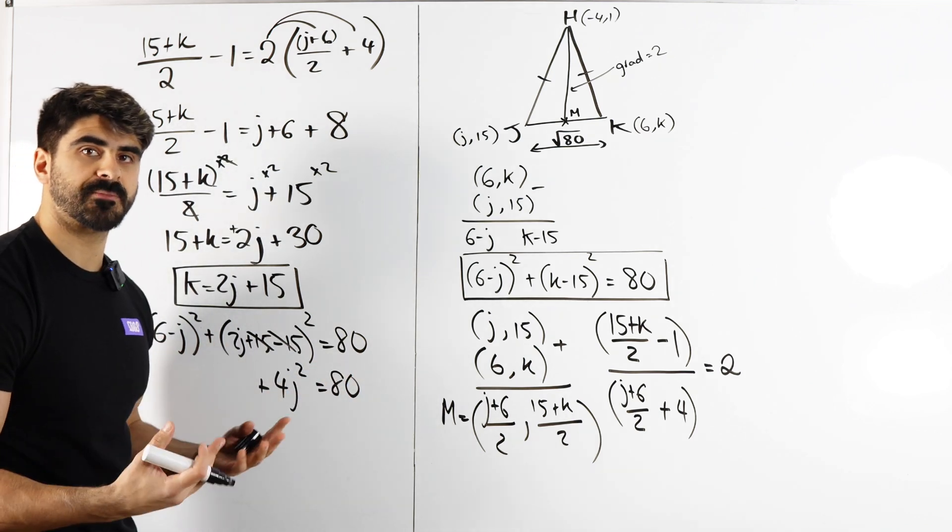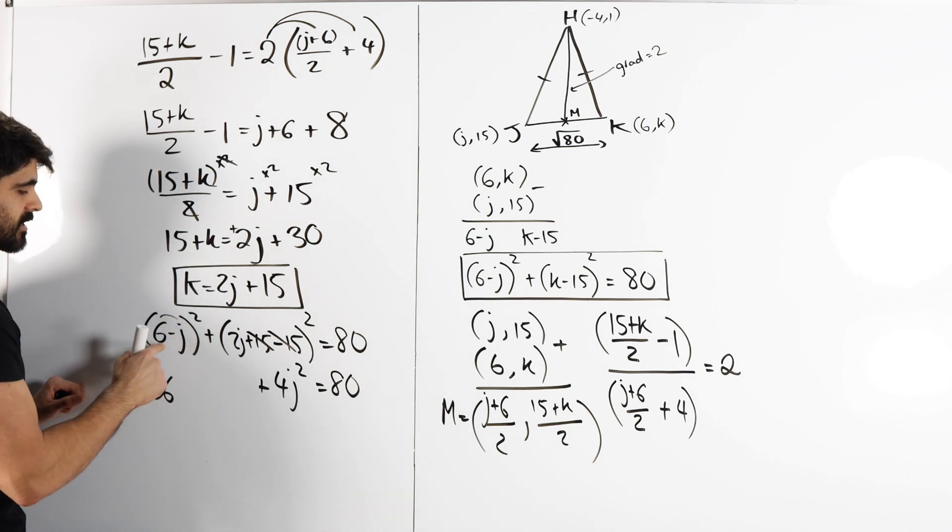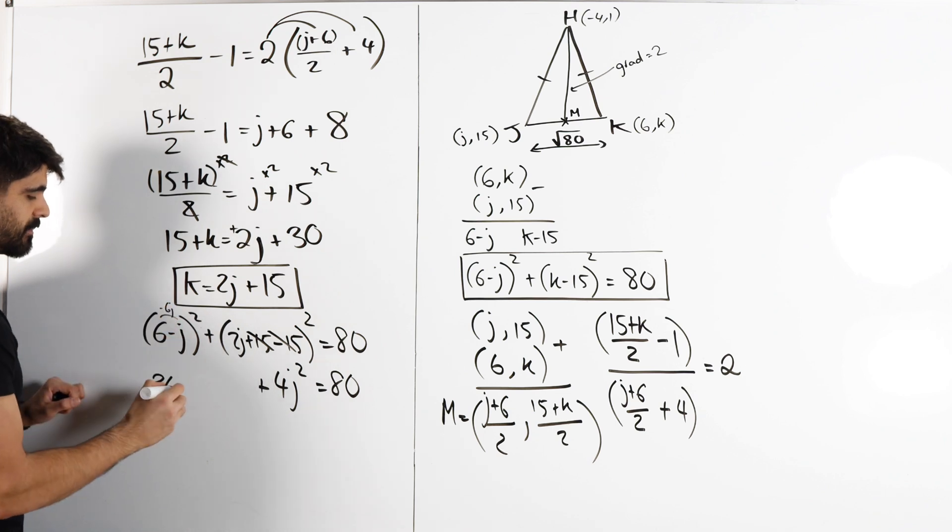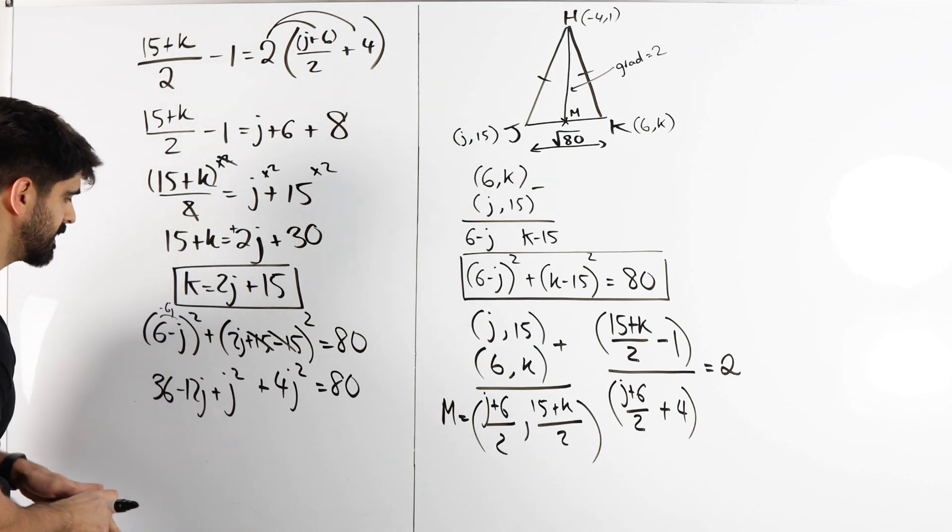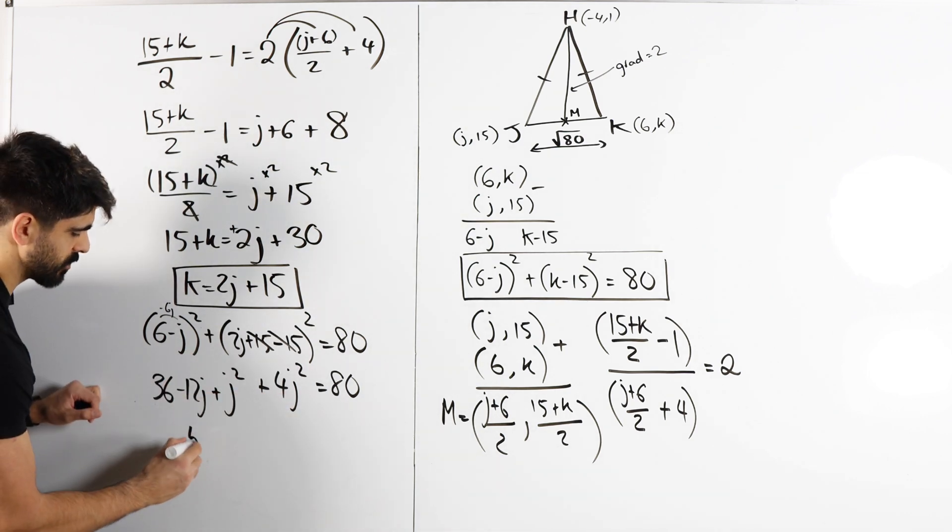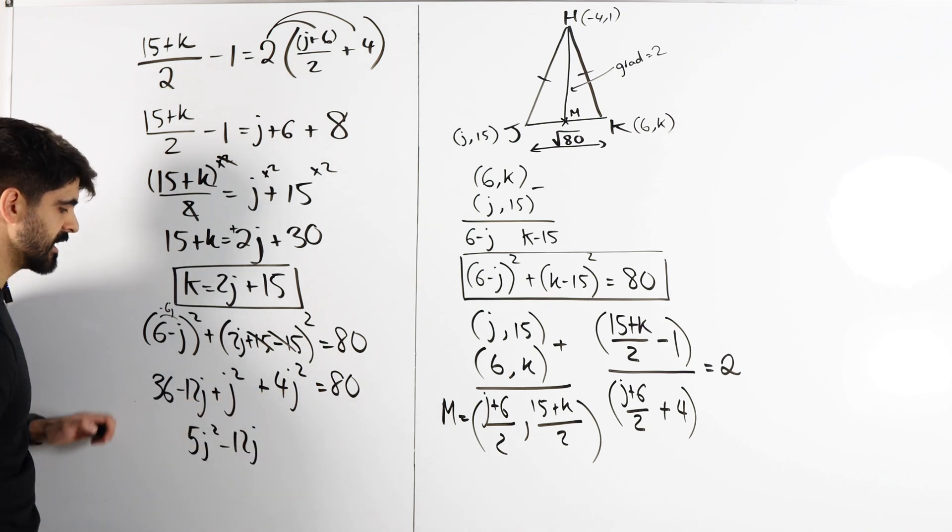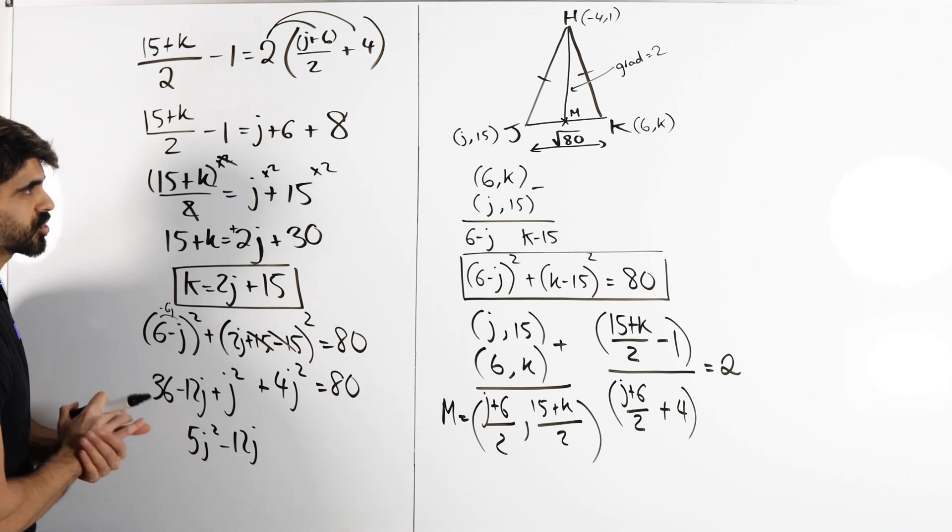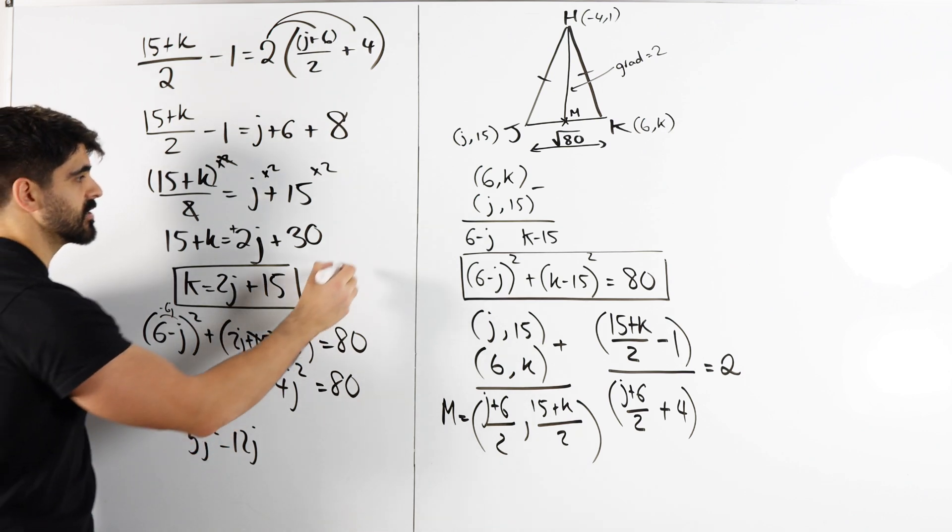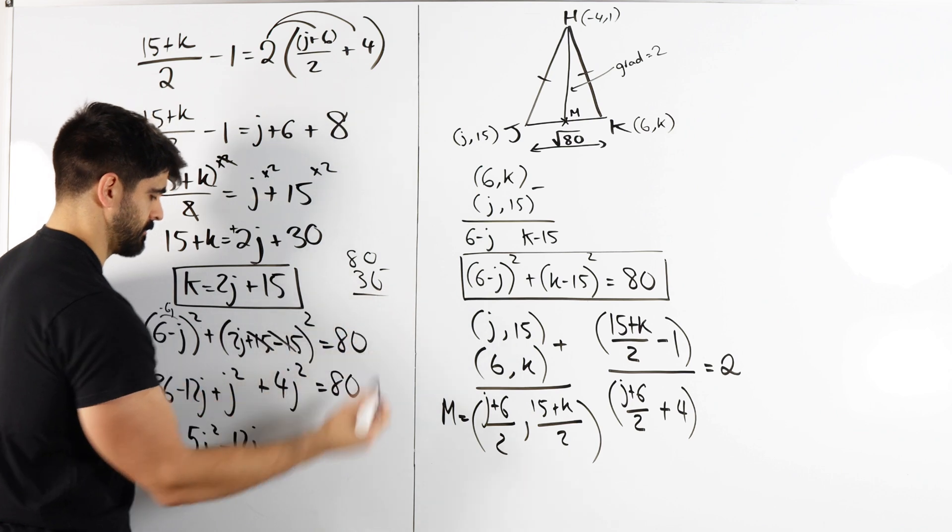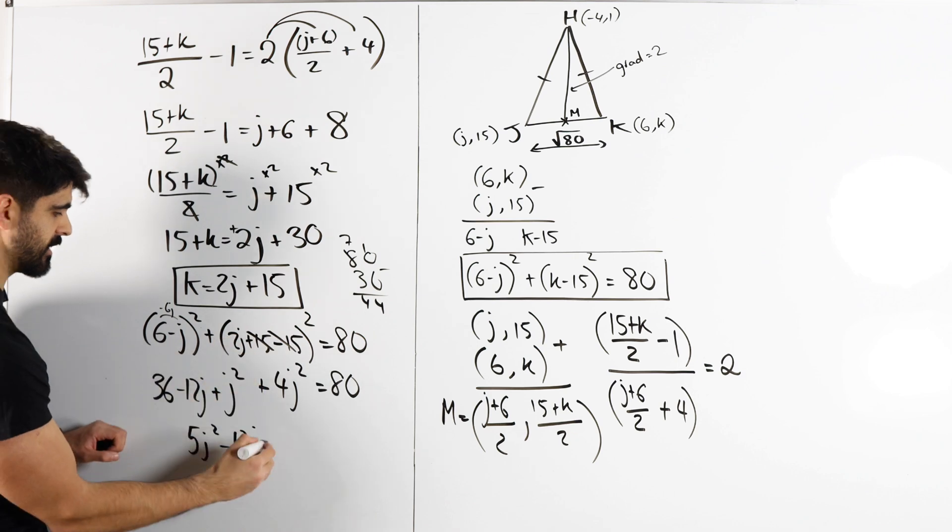Then here we expand this. There's a quick way to expand squared brackets. We square the first term, 6² is 36. Then we multiply these, 6 times -J is -6J, then you double it, so -12J. Then we square the last term, J². Here we're going to get 5J² - 12J, then we have to do 36 minus 80, which is -44.